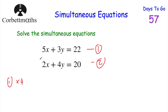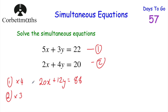Multiplying equation 1 by 4: 5x × 4 = 20x, 3y × 4 = 12y, and 22 × 4 = 88. Now multiplying equation 2 by 3: 2x × 3 = 6x, 4y × 3 = 12y, and 20 × 3 = 60. Both equations now have 12y — fantastic.